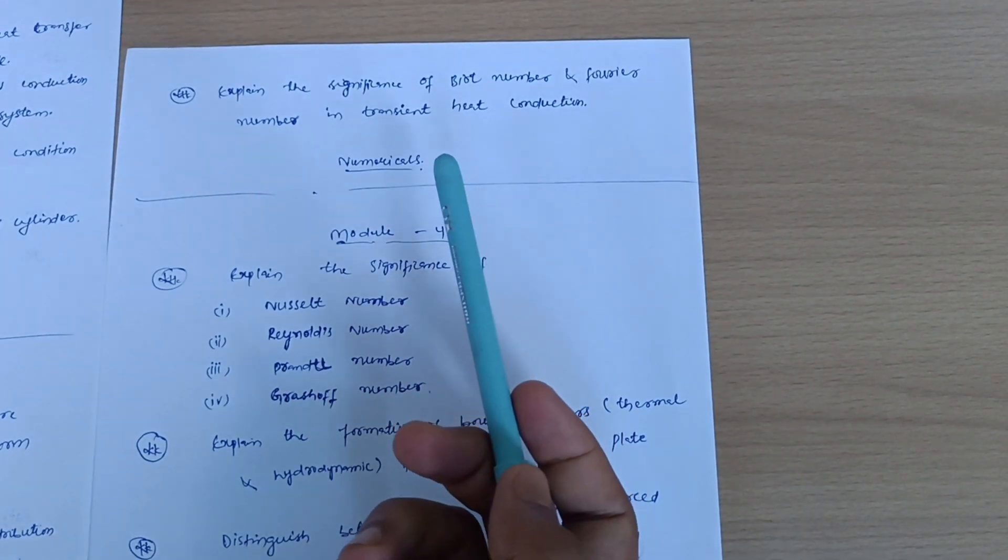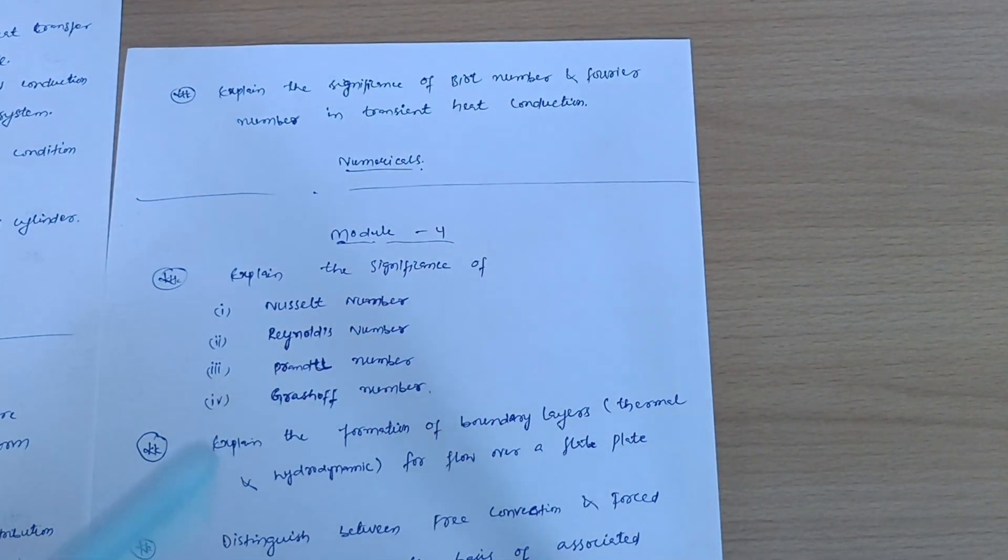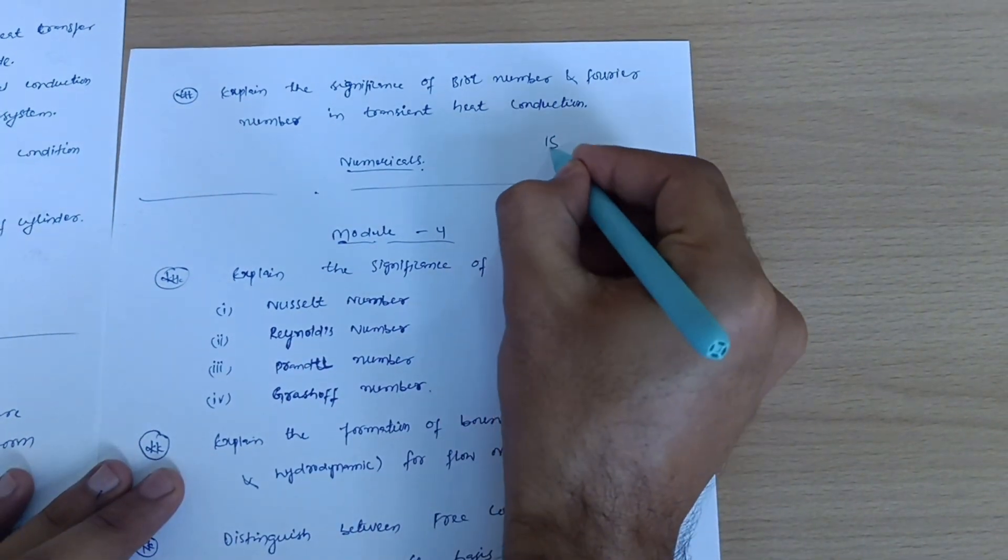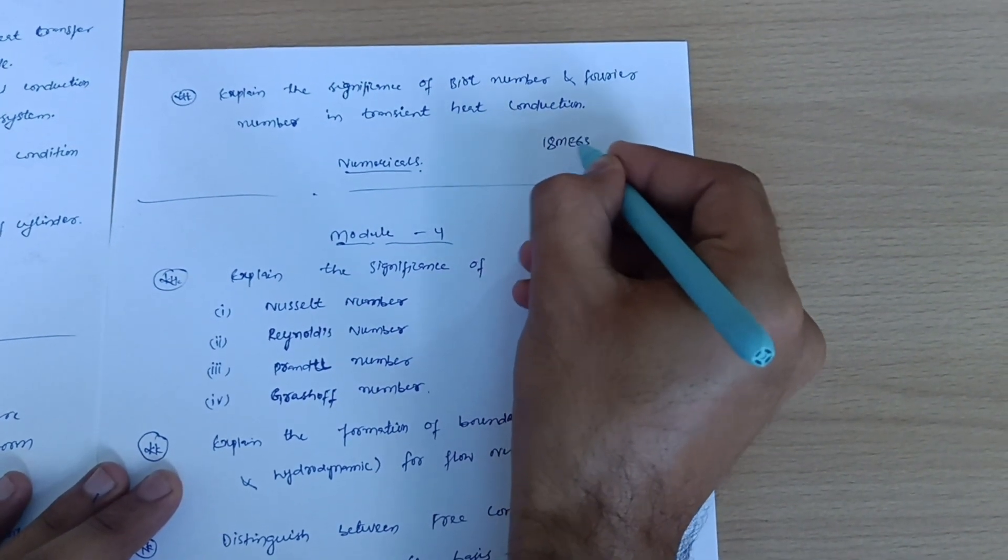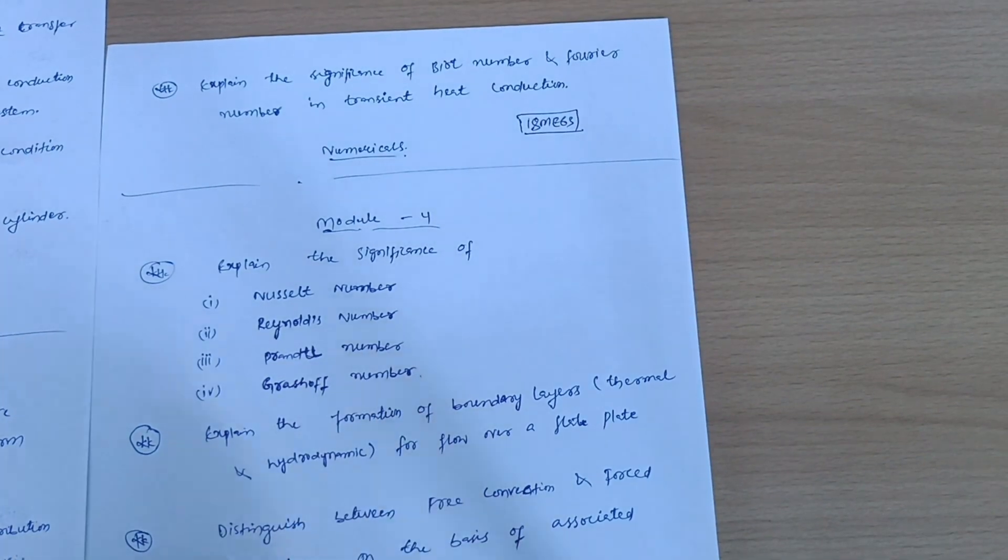As far as numericals are concerned, I have already told you - you should refer 18 ME 63, these previous year question papers, so that you will get an idea how the numericals are coming in the examination.